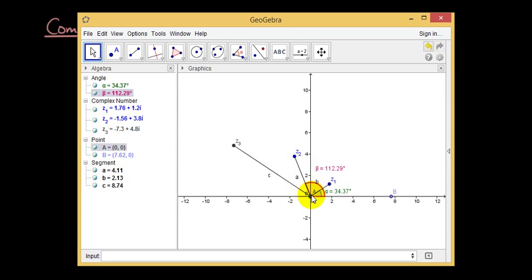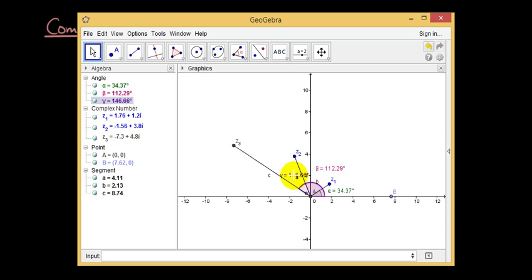The argument of z2 is 112.29 degrees. So z3, the argument should be 34.37 plus 112.29. And you can see here the argument of z3 is 146.66, which comes from 112.29 plus 34.37.